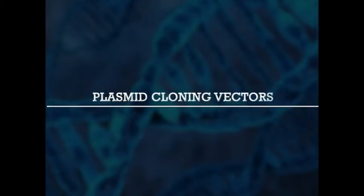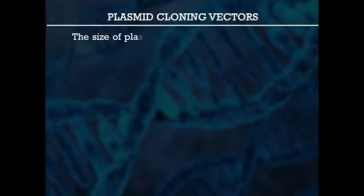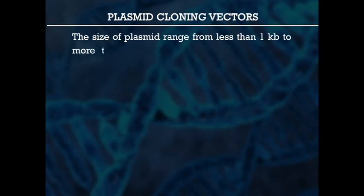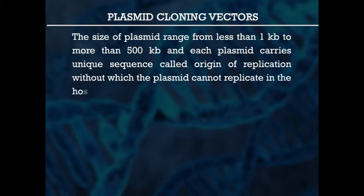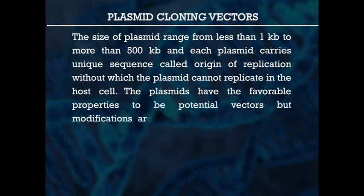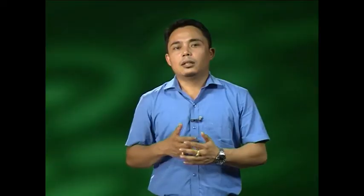Now we have plasmid cloning vectors. Plasmids are extrachromosomal, double-stranded, circular DNA molecules present in bacteria. The size of plasmids ranges from less than 1 kb to more than 500 kb, and each plasmid carries a unique sequence called the origin of replication, without which the plasmid cannot replicate in the host cell. Plasmids have favorable properties to be potential vectors, but modifications are needed for making them into desired cloning vectors, because the properties of high-quality vectors are lacking in natural, unmodified plasmids.